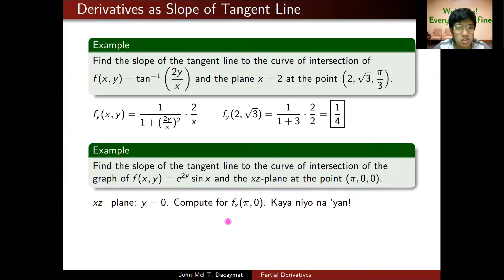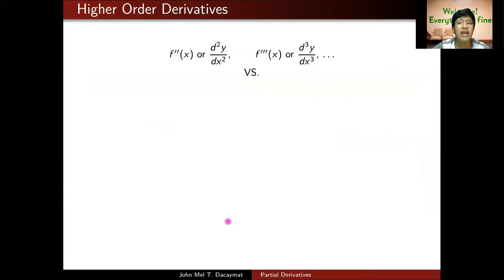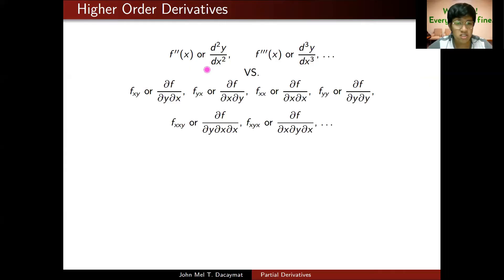Lastly, for our discussion, we're going to talk about higher order derivatives. For real valued functions, you've discussed second, third derivatives and so on, denoted in such ways. Partial derivatives also have higher order derivatives. However, since you have multiple options because there are many variables, when you have a second derivative, there are many ways to go, so there are many possible combinations.